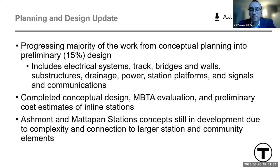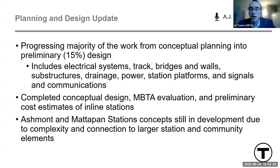The majority of the program is progressing from the concept stage to the 15% design stage. This includes electrical systems, tracks, bridges, substructures, drainage, power, inline station platforms, signals, and communications. Today we will share conceptual designs and renderings for the inline stations along with preliminary cost estimates. The team is still working on Ashmont and Mattapan station designs — there are many complexities, tradeoffs, and challenges at both locations. These are the most critical stations to the line. I'd like to introduce Phil Santos, project manager for HNTB, the primary design consultant, who will walk us through the program update for each station.